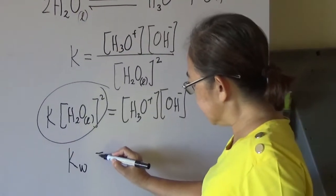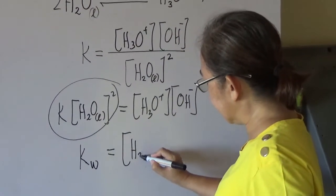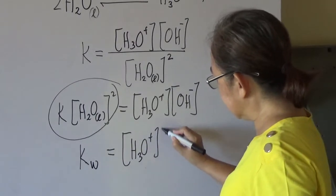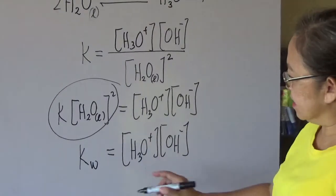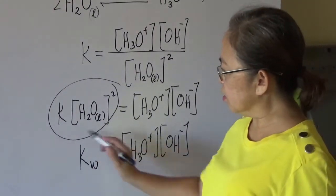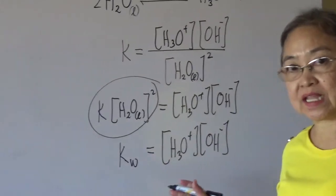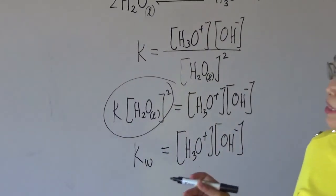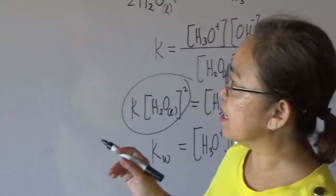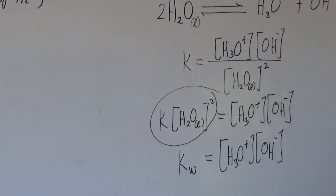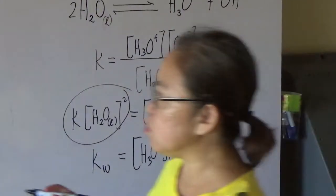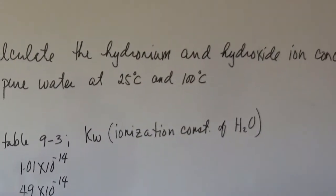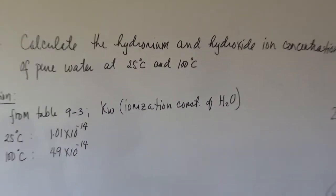So KW will be equal to the concentration of the hydronium ion times the concentration of the hydroxyl ion. The ionization constant of water is of course constant, and that is reflected in table 9-3. This is what problem 9-1 involves — the ionization constant of the water.